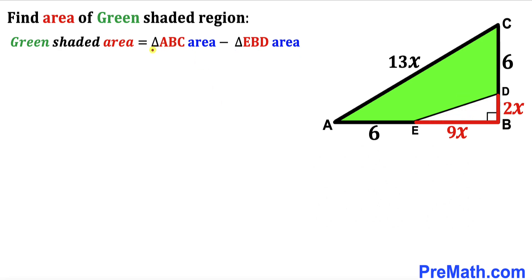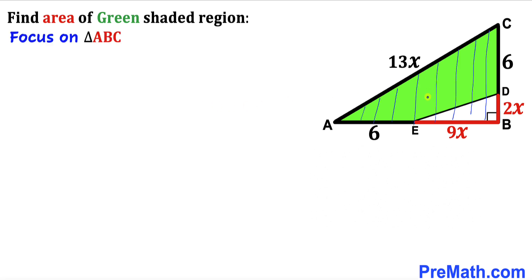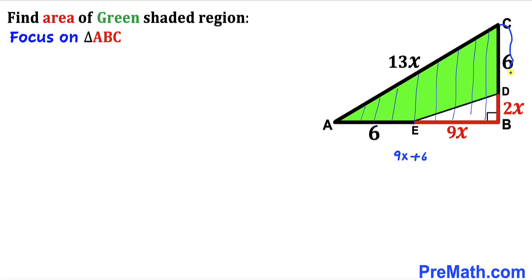Our task is to calculate the area of triangle ABC and the area of triangle EBD. To do that, we must find the value of x first. Looking at the big right triangle ABC, the whole side length AB is 9x plus 6, and the whole length BC is 2x plus 6.